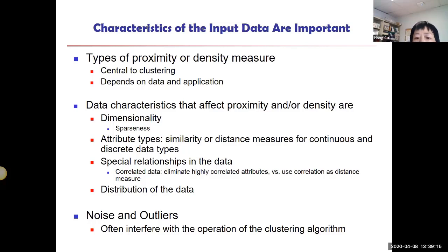So dimensionality, special relationships in the data is also a concern. So sometimes you have correlated data. When two attributes are very highly correlated, like one can directly predict the other, including those in your analysis simply adds the weight to this attribute. Because those two attributes basically give you exactly the same information, right? So in your distance measures, you basically add double the weight for this attribute. This may or may not be what you want. If it is not what you want, you should eliminate those highly correlated attributes.